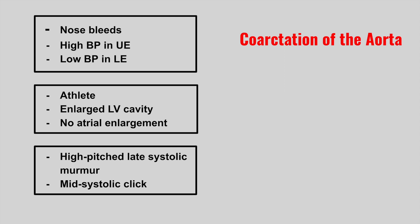The next one is an athlete with an enlarged left ventricular cavity and no atrial enlargement — this is athlete's heart. You always want to compare athlete's heart, which has no atrial enlargement, with hypertrophic cardiomyopathy, which tends to have atrial enlargement along with IV septal hypertrophy.